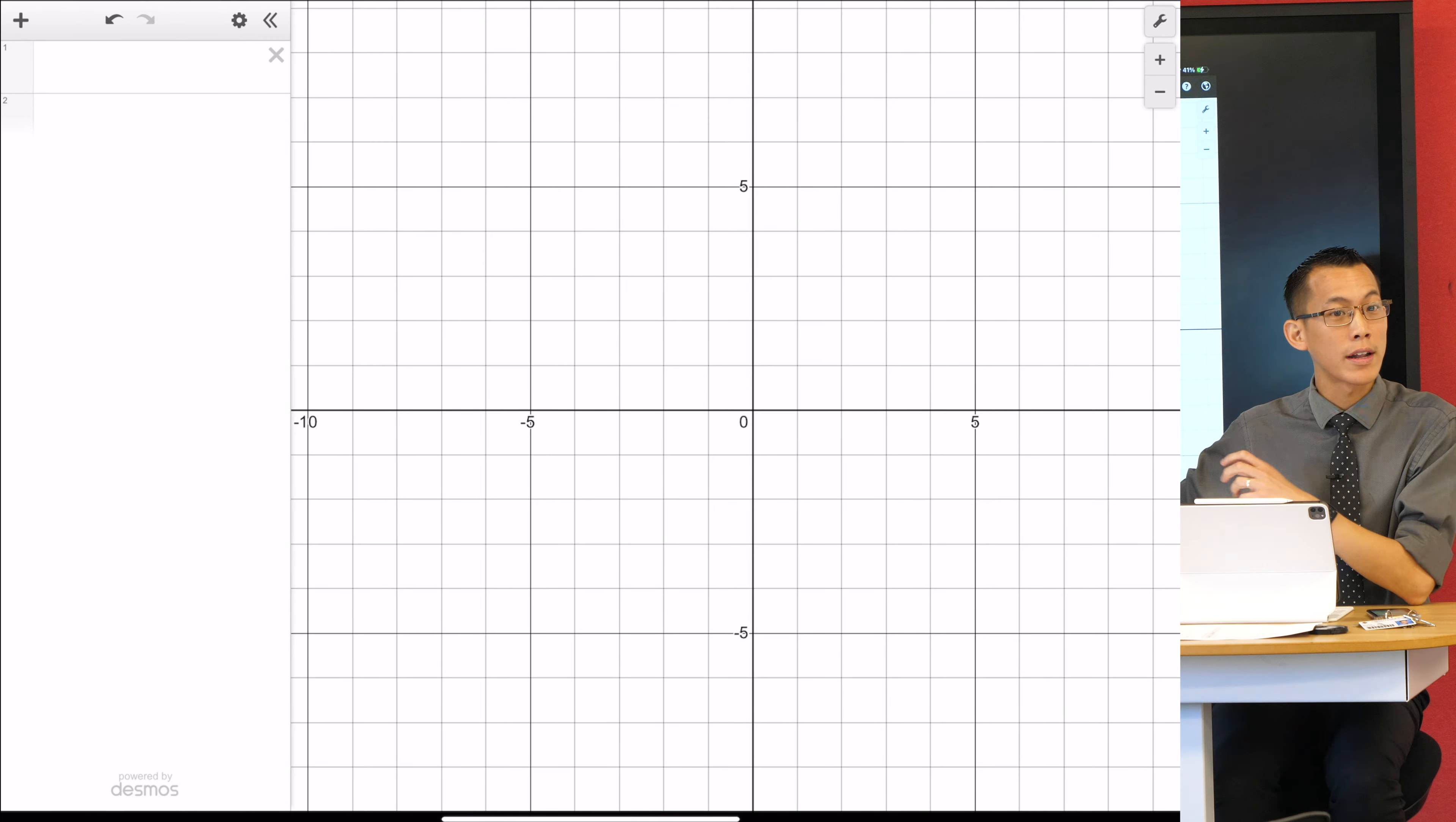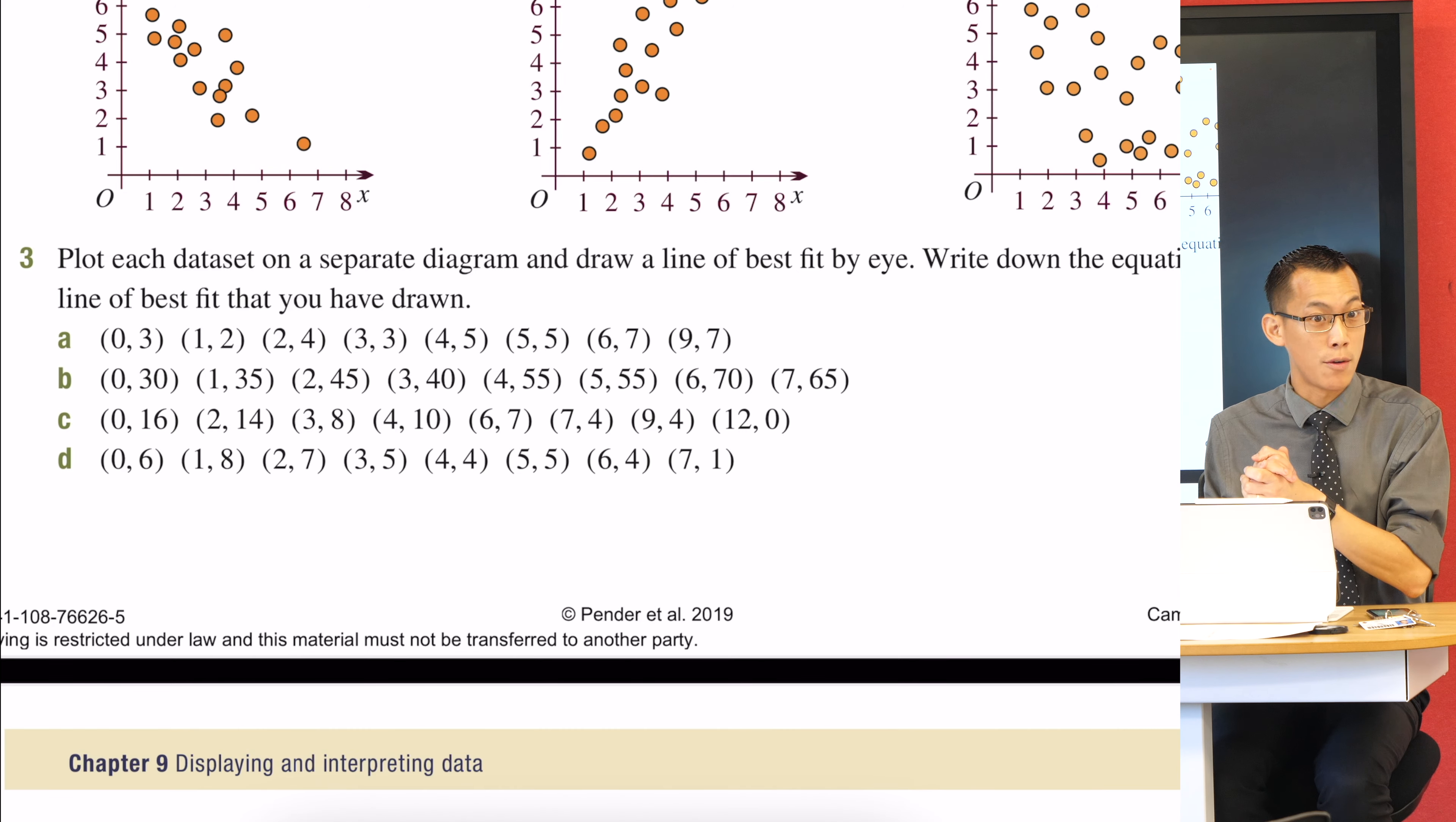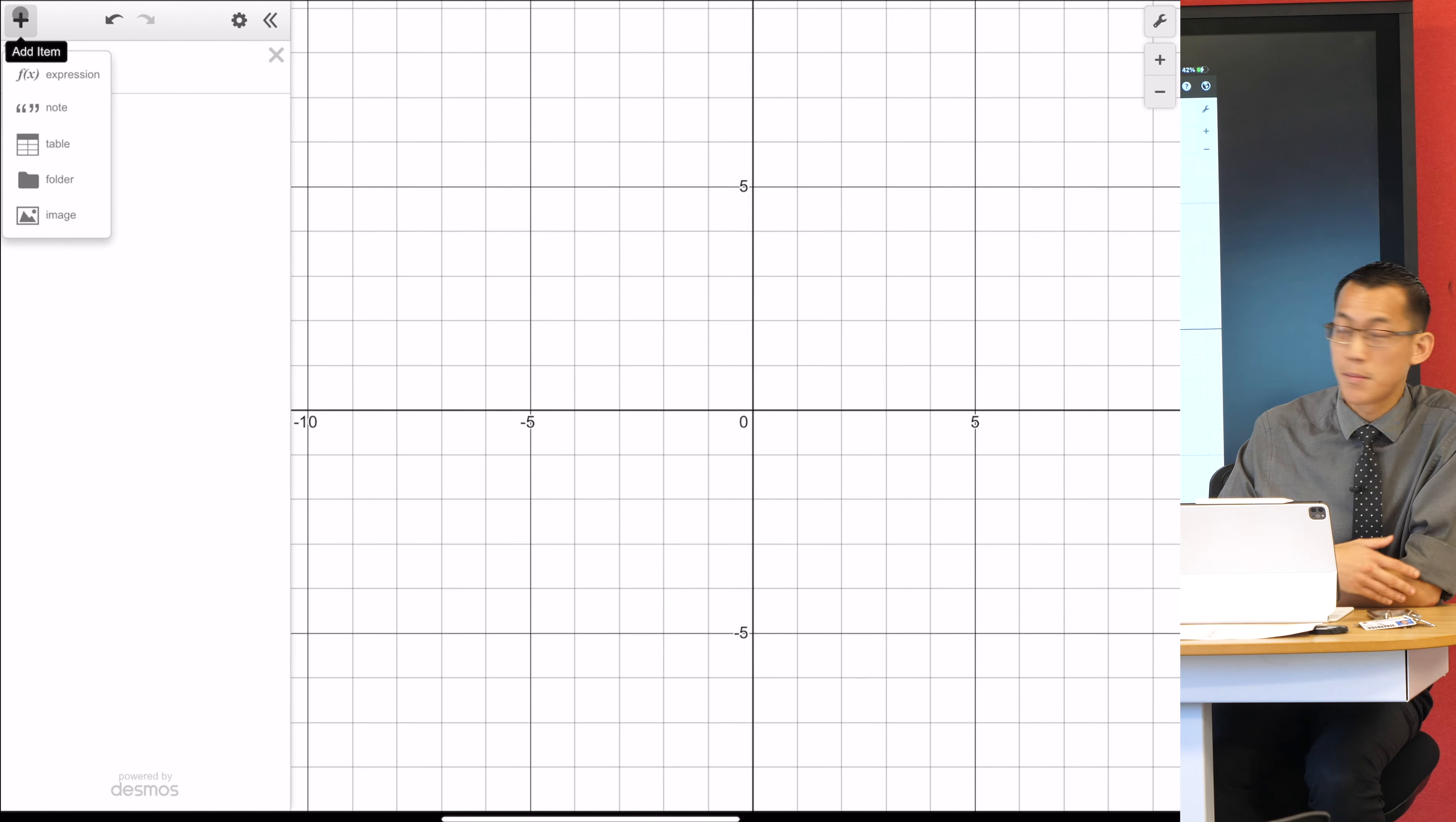So if you haven't opened Desmos already, please do that. What I'd like you to have next to that is exercise 9D, question three, which has a bunch of data sets. I asked you to do every second letter because I know it is laborious to do this by hand. What I'm going to show you right now is how to not do that by hand, because we often deal with data sets that are impractically large. That's what we have technology to help us with. Now, if you hit that plus icon in the top left hand corner, a menu comes up and you'll see one of the options says table. Go ahead and hit it for me.